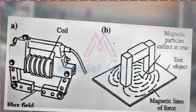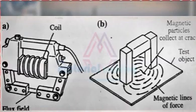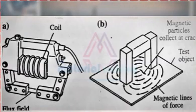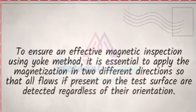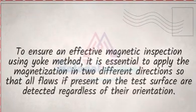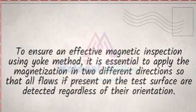Any flaws that lie across the magnetic field are shown due to breakage of magnetic line flow, as represented in the picture. To ensure an effective magnetic inspection using the yoke method, it is essential to apply the magnetization in two different directions so that all flaws present on the test surface are detected regardless of their orientation.